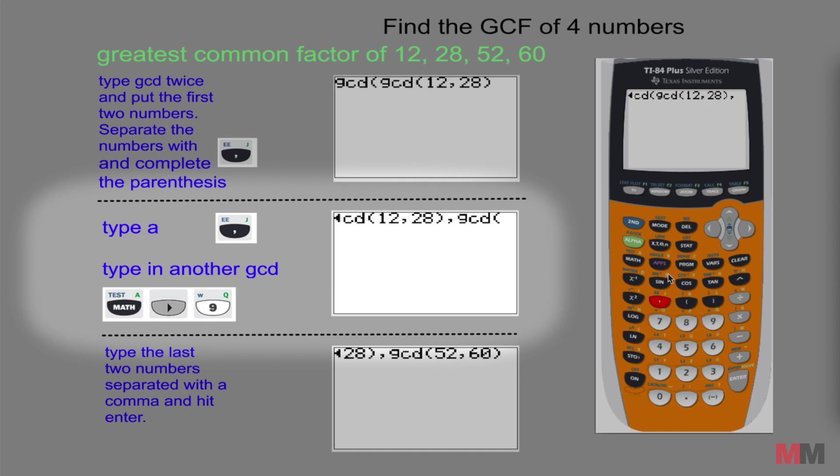Type a comma and then you're going to do that GCD function once again. Math, right arrow key, 9. Looks super confusing but just practice this a little bit and you'll be super fast at it.